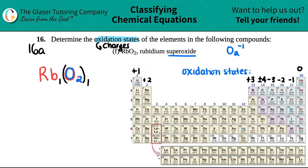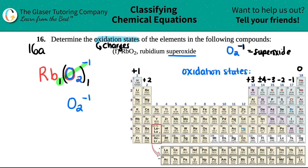Rb had a subscript of one. Let's take those subscripts and crisscross them back up. For the superoxide: we take the one and crisscross it back up, giving us a negative one charge — the negative is always in the back, the positive in the front. So O₂ was a negative one. Then for rubidium: I take the one (not the two, that belongs to the polyatomic) and crisscross it up — rubidium was a plus one.